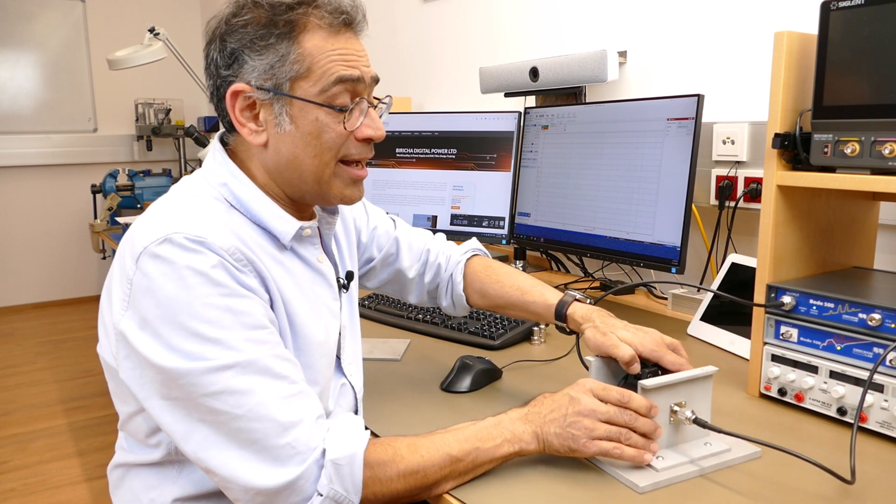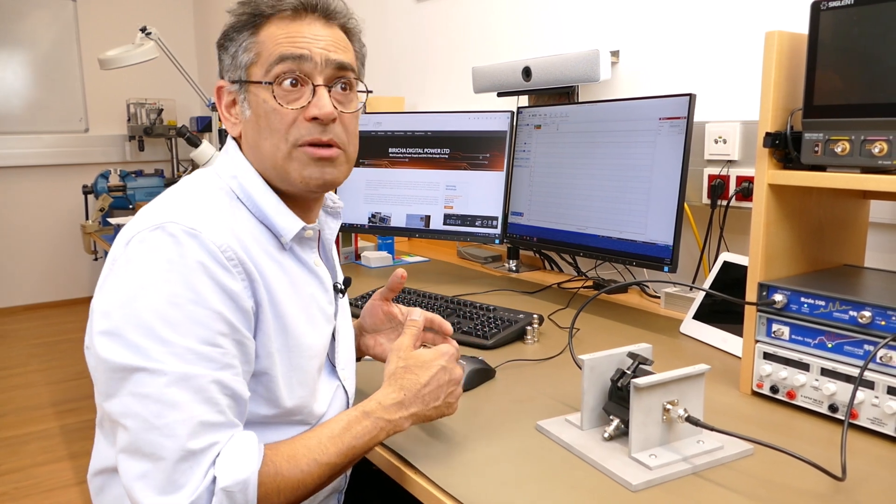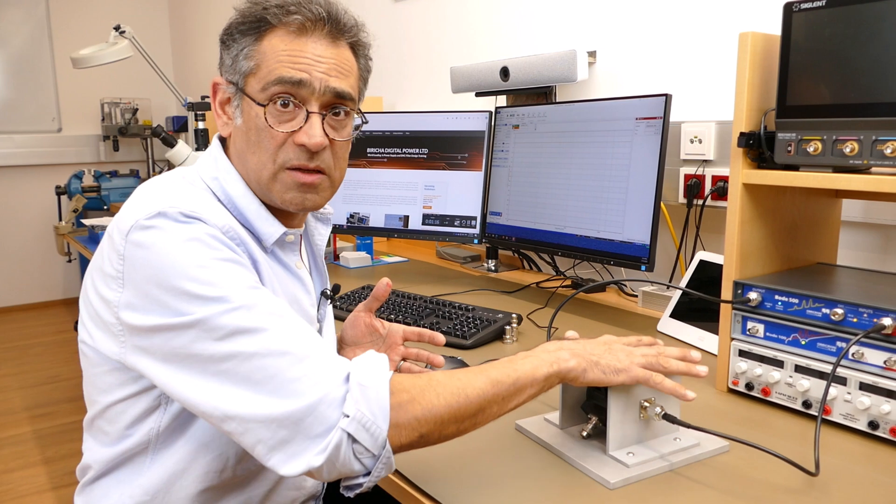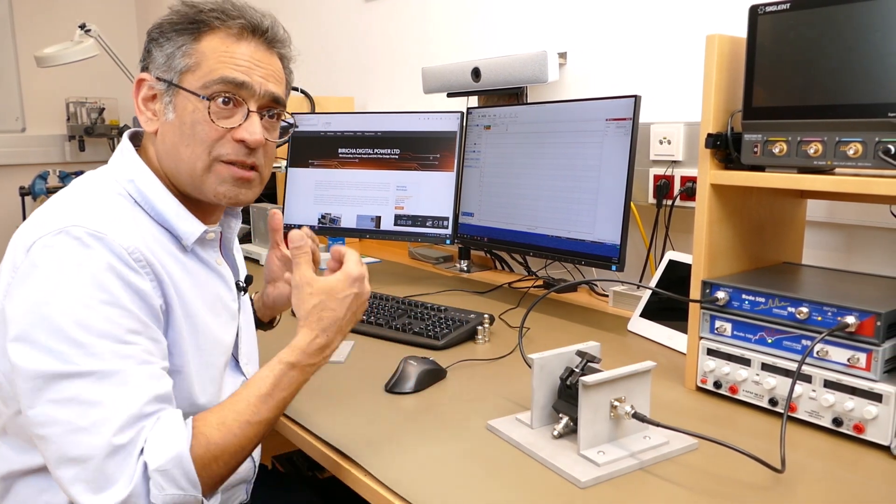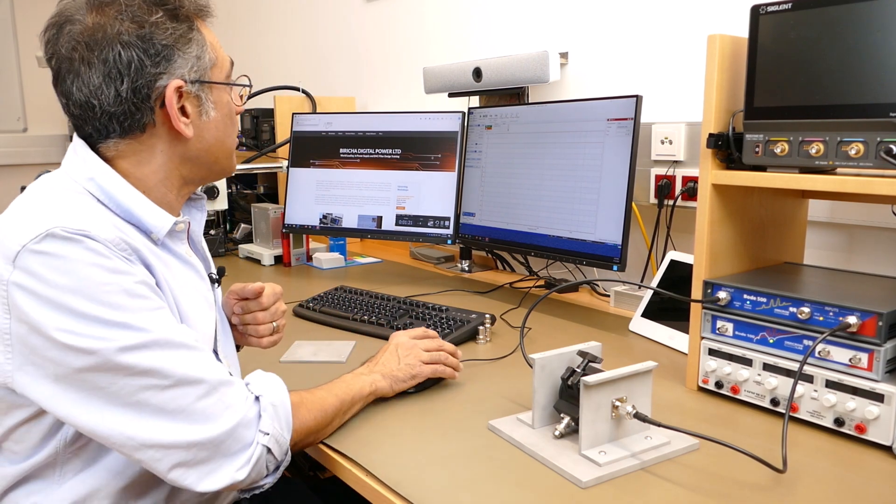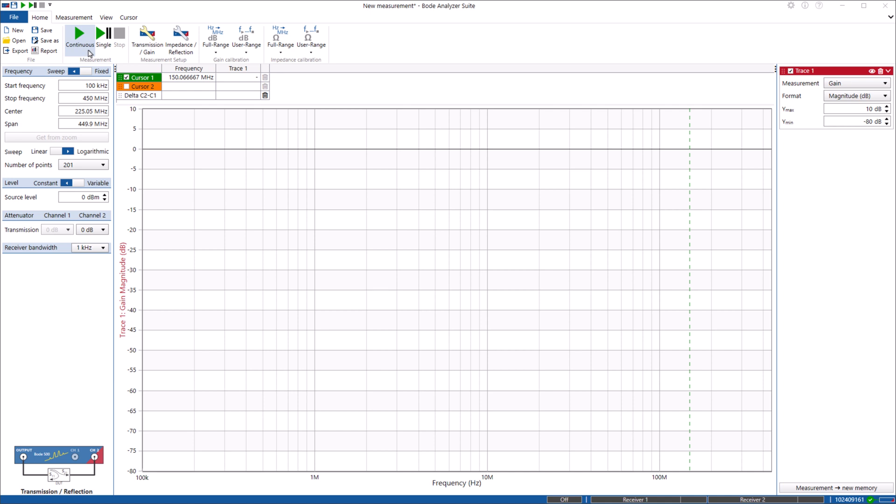We are talking at very high frequencies - we're going from 100 kilohertz to let's say 350 megahertz in this particular case - and there's bound to be some anomalies. So the first thing that we have to do is normalize our measurement. At the moment if I make a measurement on my Bode 500, you will see that as the frequency goes higher here, the measurement is not quite correct and we need to normalize it.